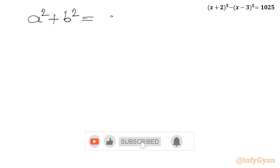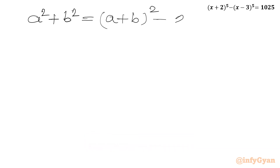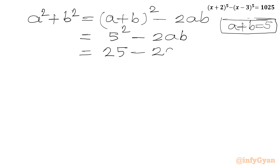Now I will write one algebraic formula: a² plus b² equals (a+b)² minus 2ab. Our equation 2 was a plus b equals 5, so I can substitute: 5² minus 2ab, which gives us 25 minus 2ab.